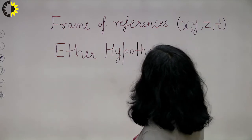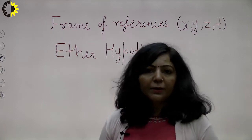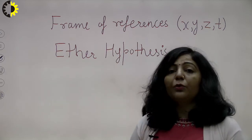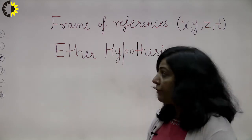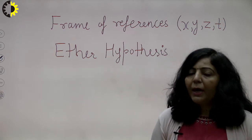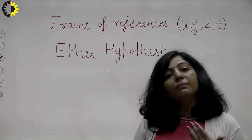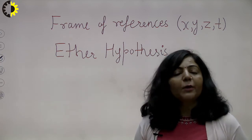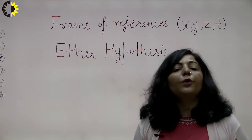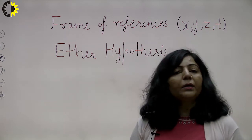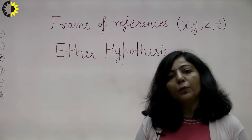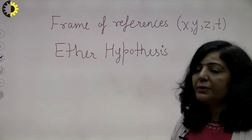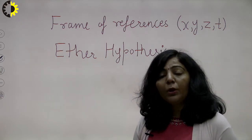Under the ether hypothesis, we discussed that at the beginning of the 19th century it was assumed that the universe is filled with a hypothetical medium. That medium is rigid, massless, and perfectly non-resistive, and every object in the universe moves freely through it. Ether was termed as a rest frame or zero frame of reference, and many experiments were performed to prove its existence.